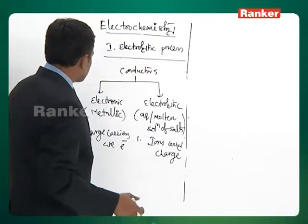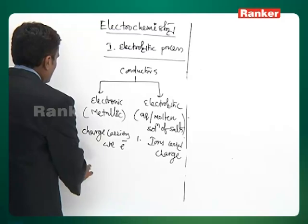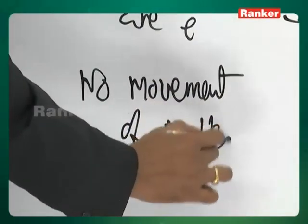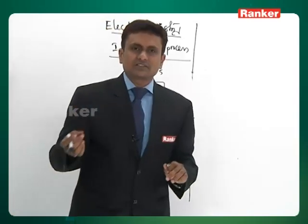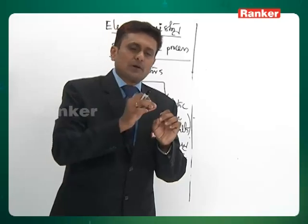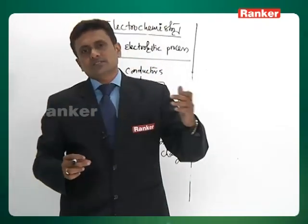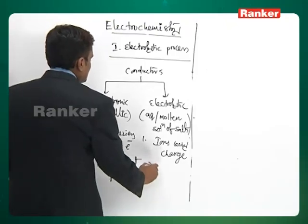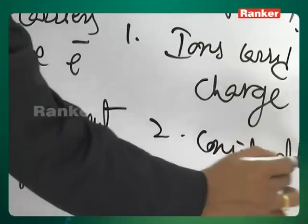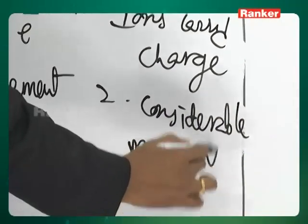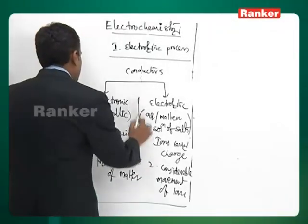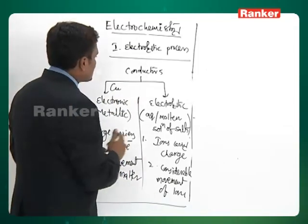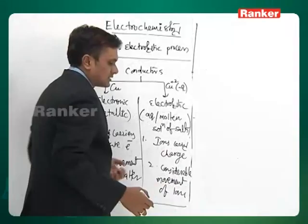In a metallic conductor there is no movement of matter at all. When you take a copper wire through which charge is passing, you do not expect the copper wire to move — only the electrons move due to the change in potential. In electrolytic conductors, there is considerable movement of matter, that is, the ions. If I take a copper rod, I call it a metallic conductor; if I take an aqueous solution of copper ions, I call it an electrolytic conductor.